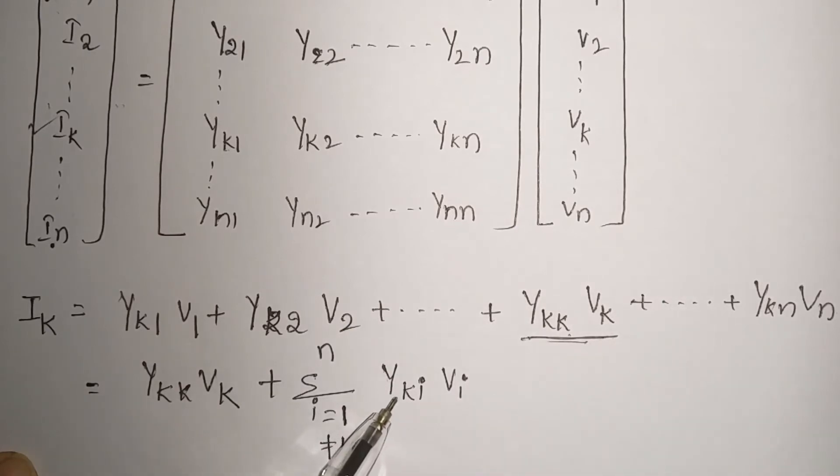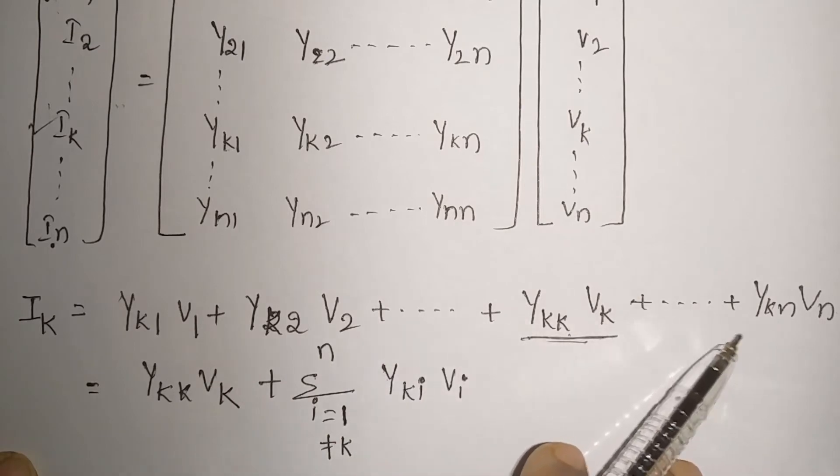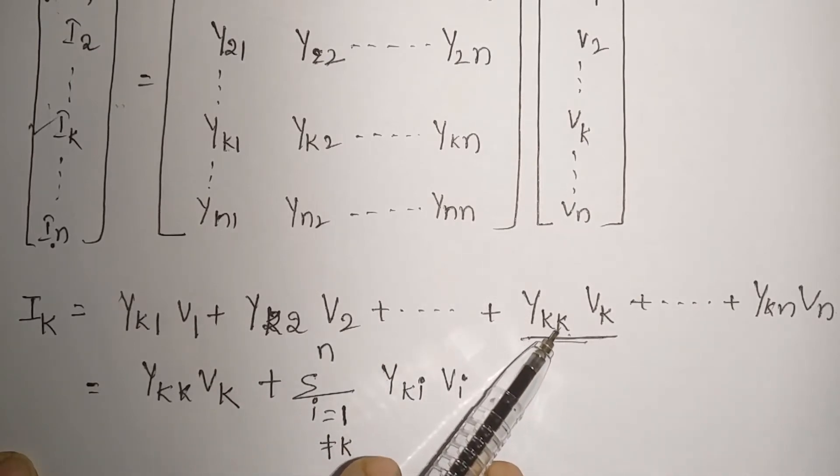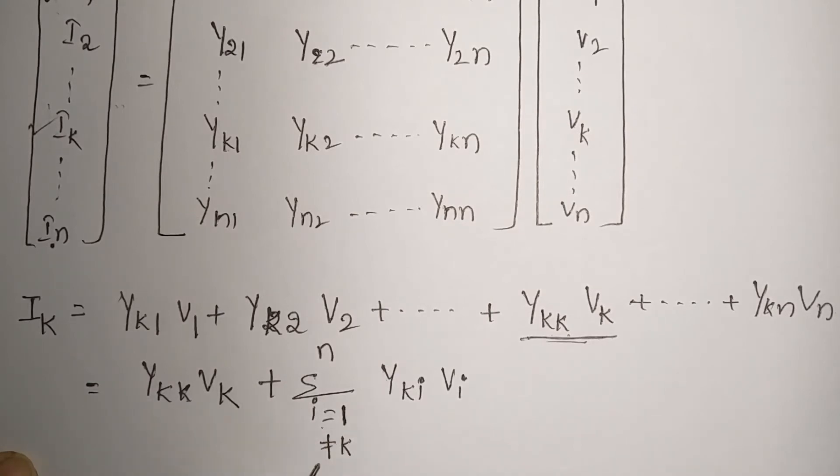It can be written as Yki, so i can be 1, 2, and so on n, but is not equal to k because we already separated this term. That's why here we have written i equal to 1 but is not equal to k to n. What is the other part? Here V1, V2, and so on Vn is there, so we can write Vi.